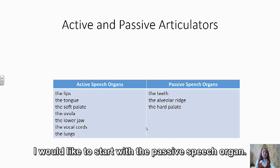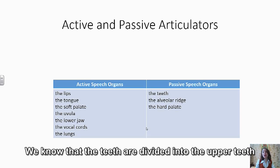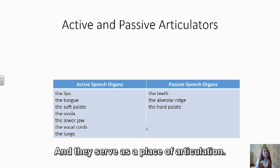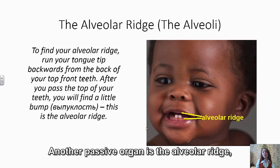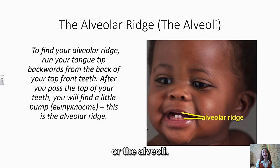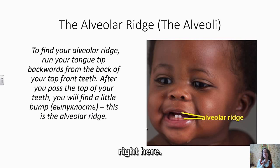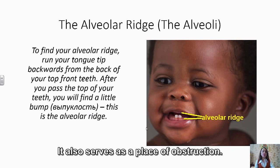I would like to start with the passive speech organs. The teeth are divided into the upper teeth and the lower teeth. They are fixed — they are bones — and they serve as a place of articulation. Another passive organ is the alveolar ridge. It is a bump located behind the upper teeth, right here, and it also serves as a place of obstruction.